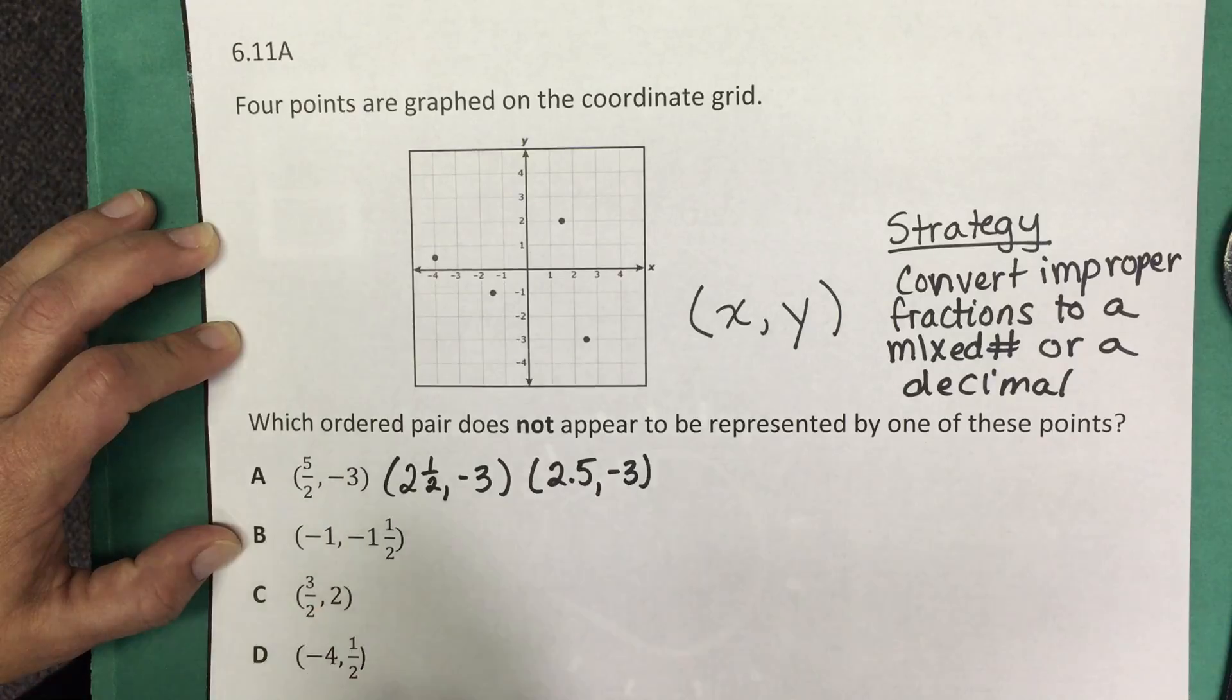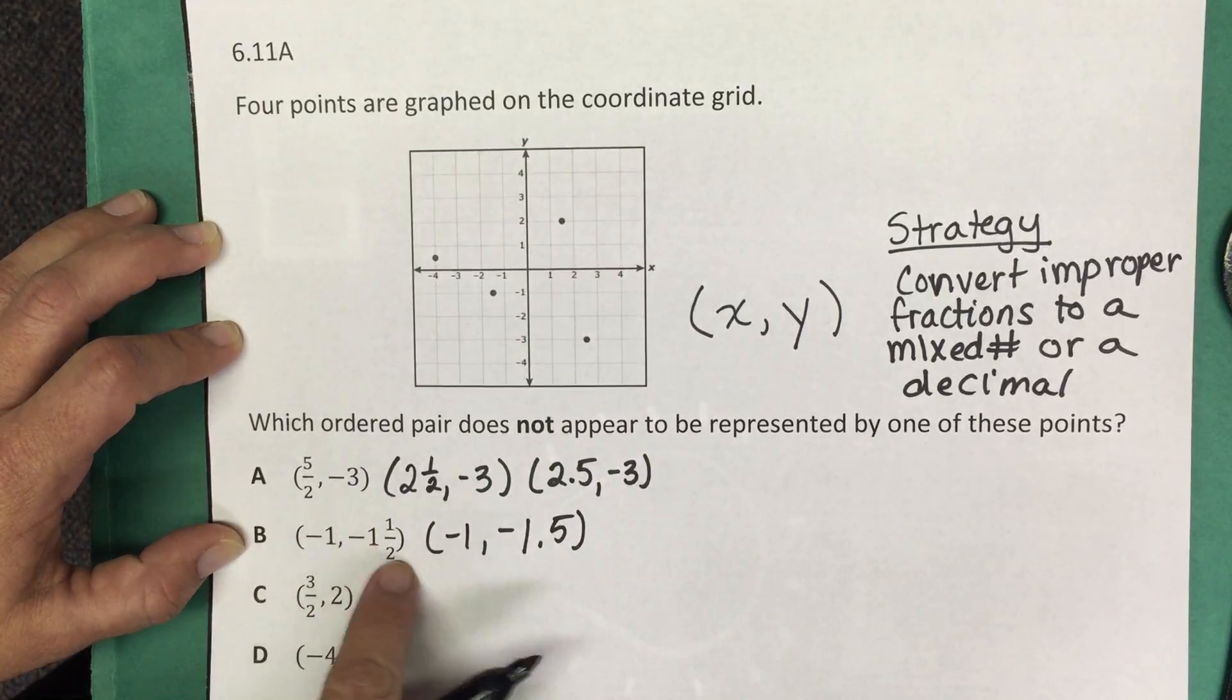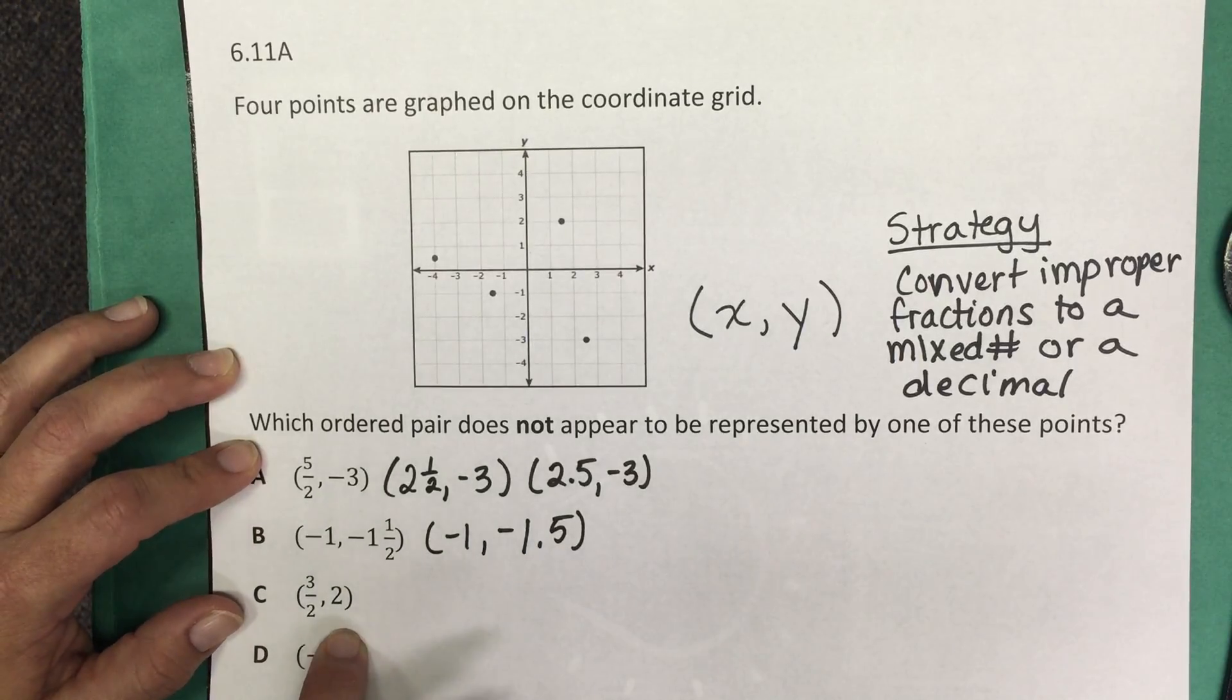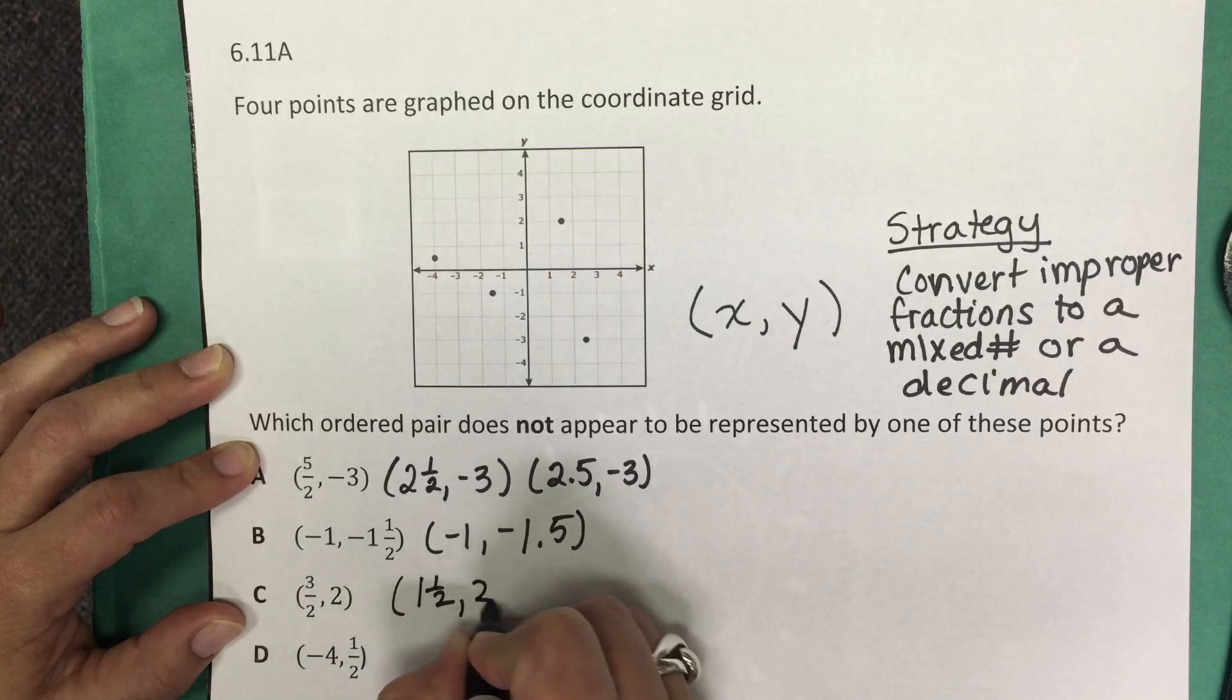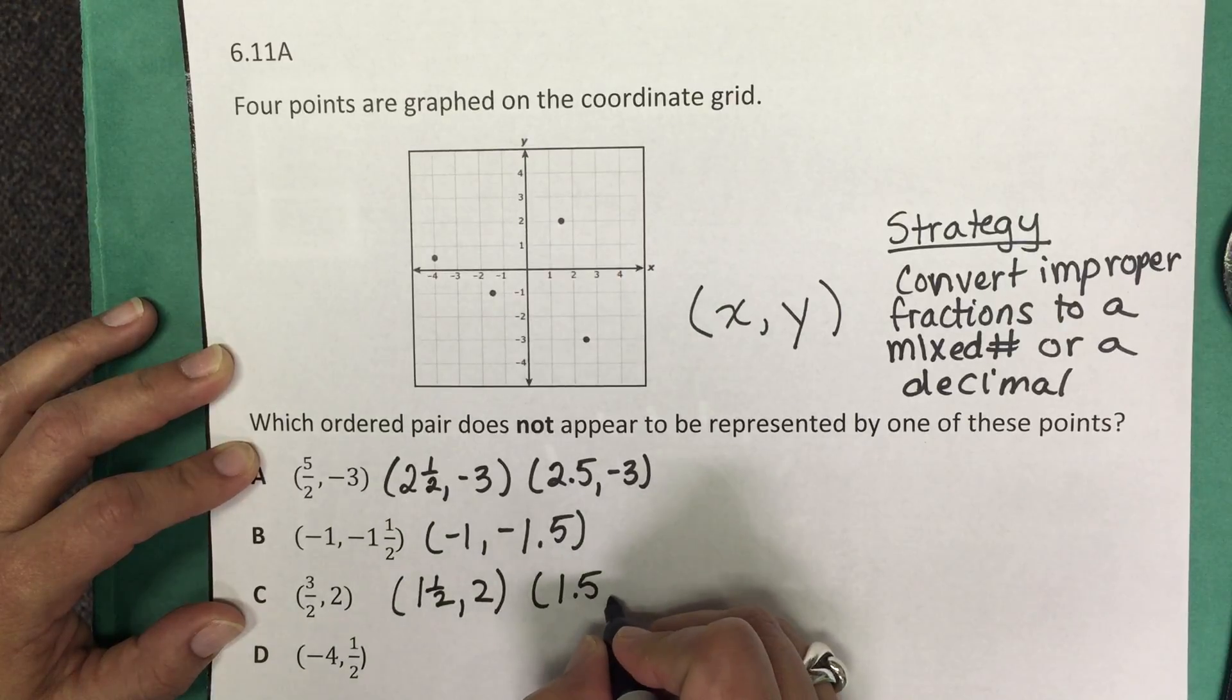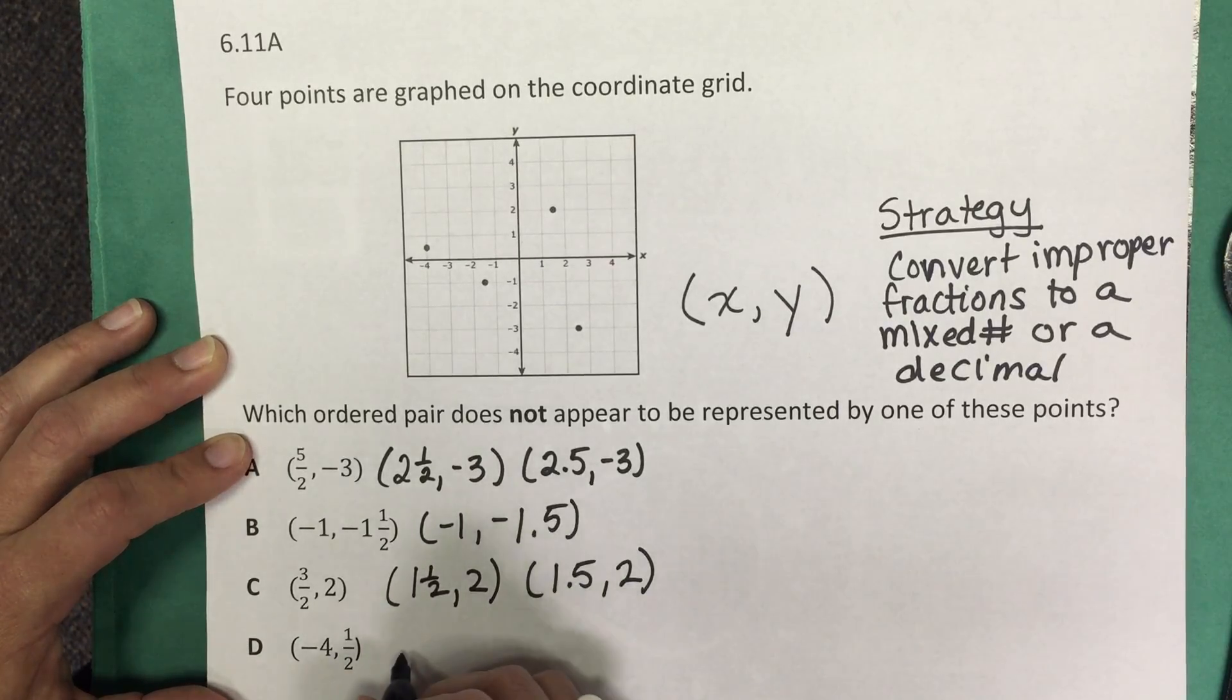Answer choice B again has a mixed number and we can leave that, but if we want we can also go ahead and convert it to the decimal, which negative one and a half—the decimal equivalent is negative one and five tenths. Again in C we have an improper fraction, so we can convert that to a mixed number. Three halves would convert to one and one half. We can also convert that to a decimal, which would be one and five tenths. And then our last one is already written with a fraction of one half. We could convert that to a decimal, which would be zero point five or five tenths.